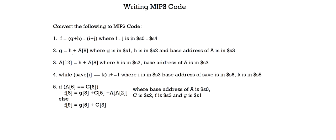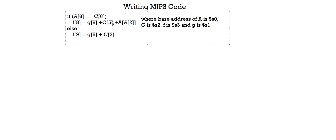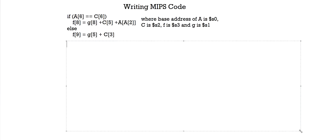Now for our final example. This has no loops — the only tricky part is that it's a little lengthy. We've already studied every single one of these techniques in the first four examples, so it shouldn't be too bad. If A of six is equal to C of six, we carry out this statement. In order to compare, we need the branch instruction. But before we can do that, we need to bring A[6] and C[6] into separate registers.